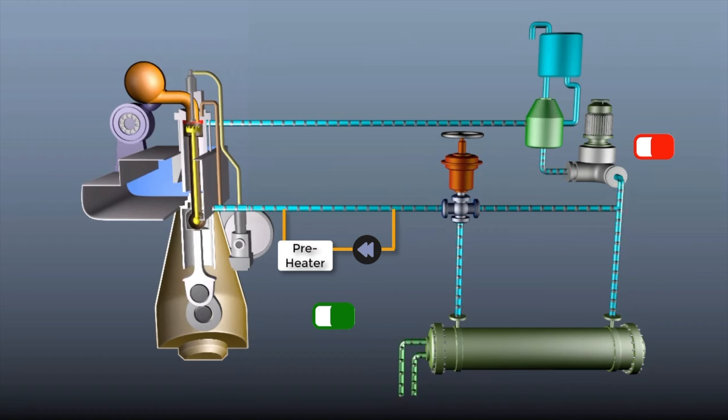When the engine is standstill, the fresh water is continuously circulated in the circuit via pre-heater using circulation pump. Before starting the main engine, circulation pump is stopped and the jacket water pump is started.